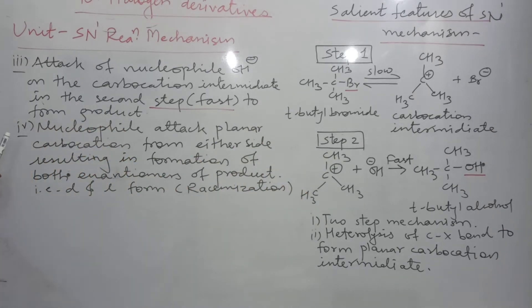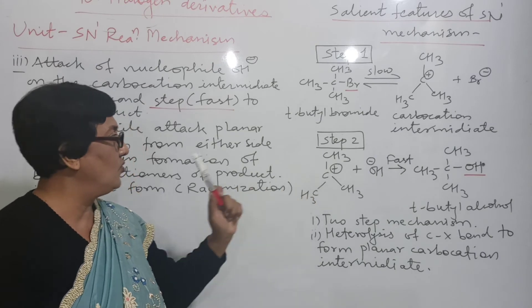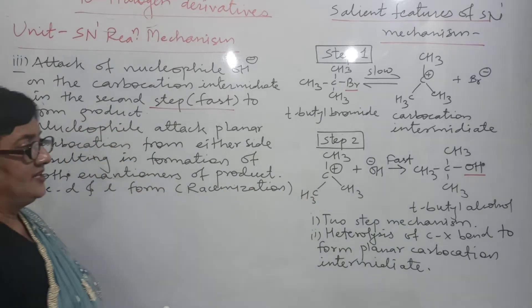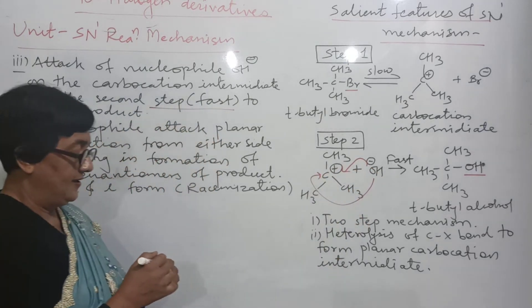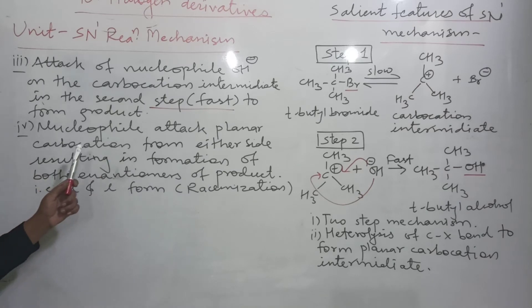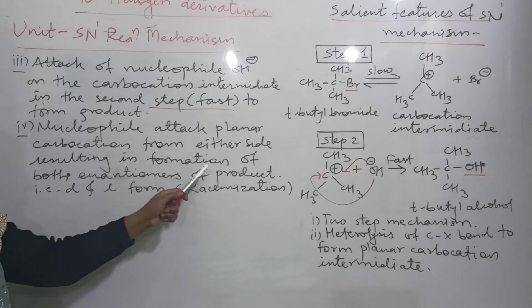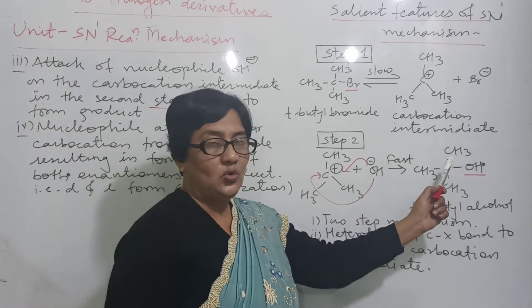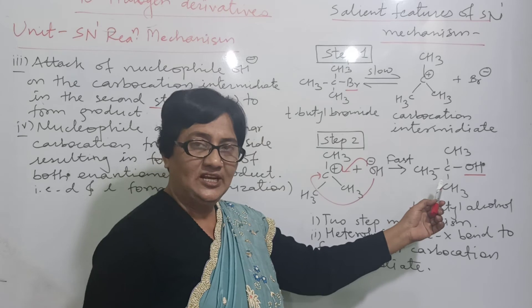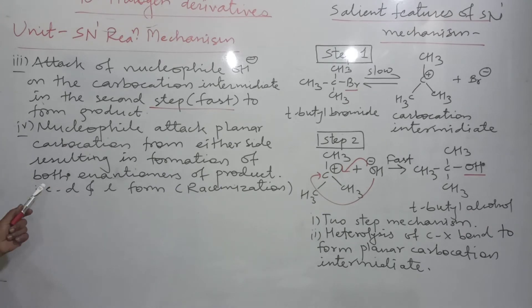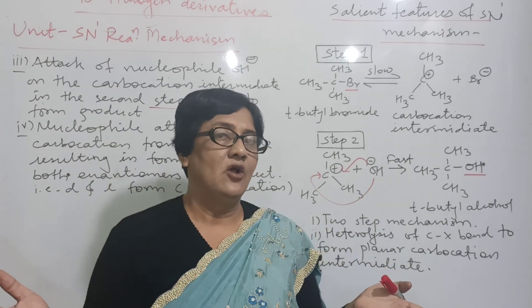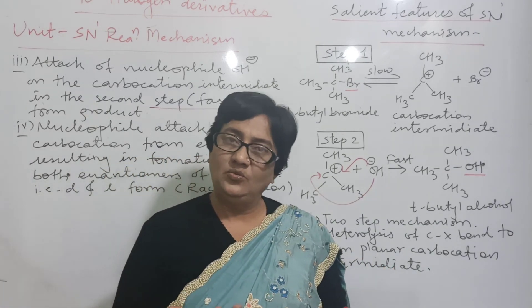Now, fourth point, nucleophile attack planar carbocation from either side. So, that is D and L form, which is called racemization. Racemic mixture, optically inactive.